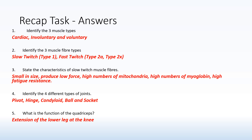Question two: identify the three muscle fibre types. You've got slow twitch type 1, fast twitch type 2a and type 2x. And obviously you need to know the characteristics of those as well.